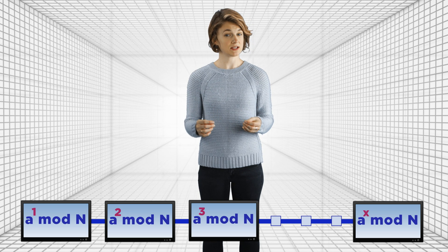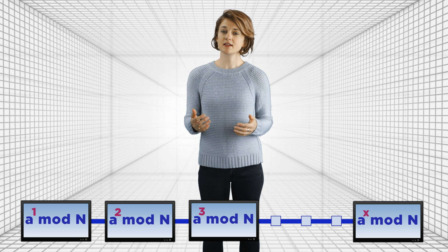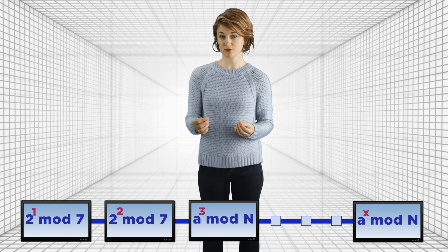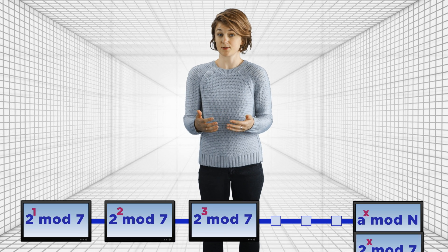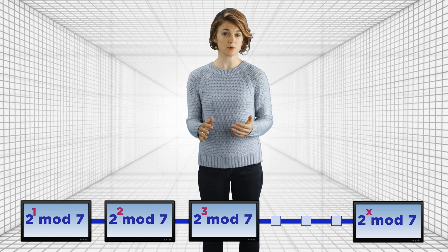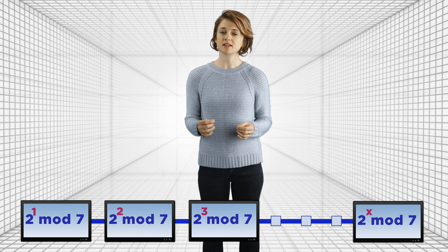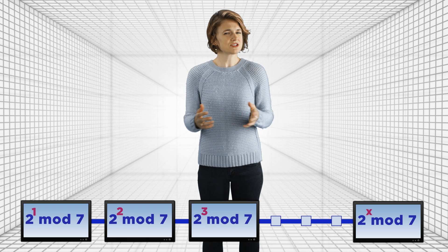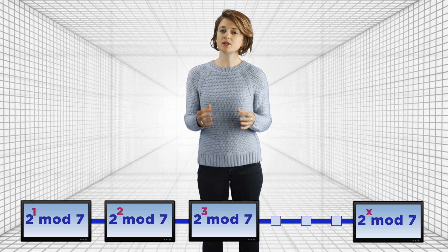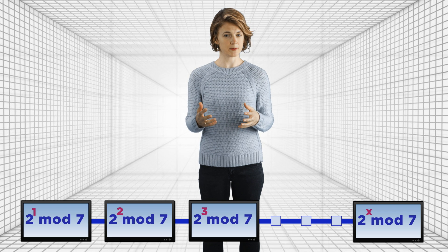Remember that we have a superposition whose basic states look like a to the 1 mod n, a to the 2 mod n, a to the 3 mod n, and so on. Let's pick a tiny example, like a equals 2 and n equals 7. Then the components of the superposition are 2 to the 1 mod 7, 2 to the 2 mod 7, 2 to the 3 mod 7, and so on, which is the repeating pattern 2 4 1, 2 4 1, 2 4 1. Because this example is so small, we can just see that the period is 3 by looking at it. But how can we use our dials to figure out the period?